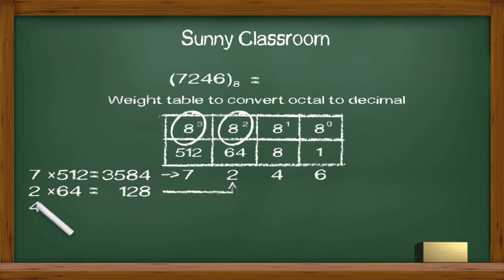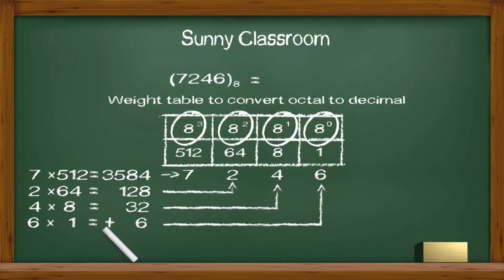4 times 8 to the first power, and we get 32. And 6 times 8 to the zero power, and we get 6. Now we add them up, and we get 3750. Thus the octal 7246 is 3750 in decimal.